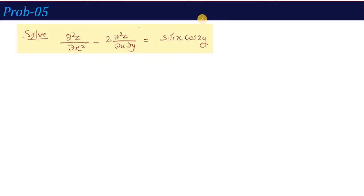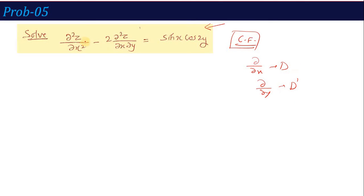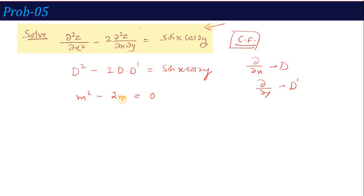The first step is CF calculation. For CF, we consider the auxiliary equation. Replacing D with m and D' with 1, the auxiliary equation becomes m² minus 2m = 0. Factoring gives m(m - 2) = 0, so m = 0 and m = 2, which are distinct roots.